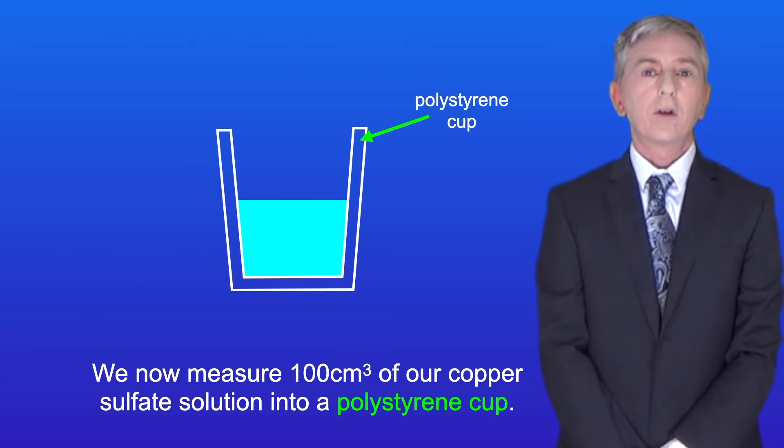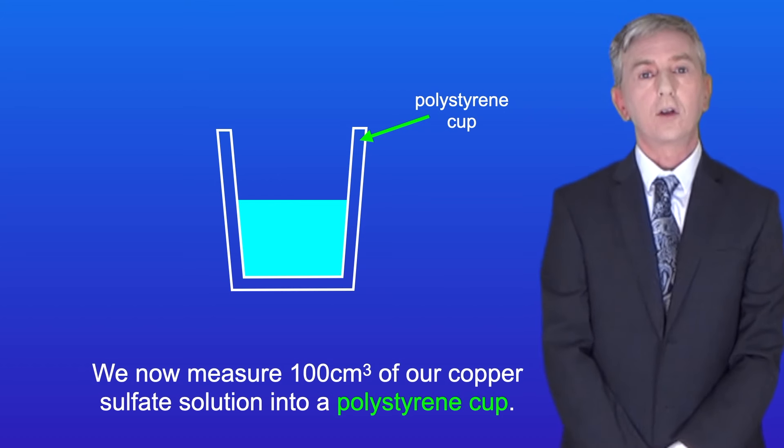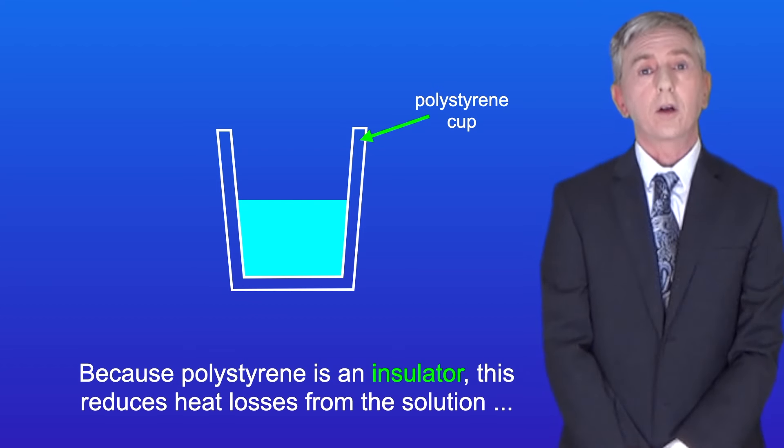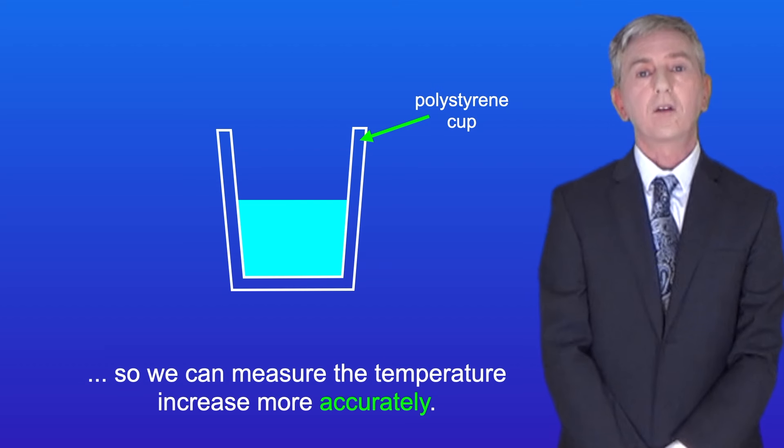We now measure 100 centimeters cubed of our copper sulfate solution into a polystyrene cup. Because polystyrene is an insulator, this reduces heat losses from the solution, so we can measure the temperature increase more accurately.